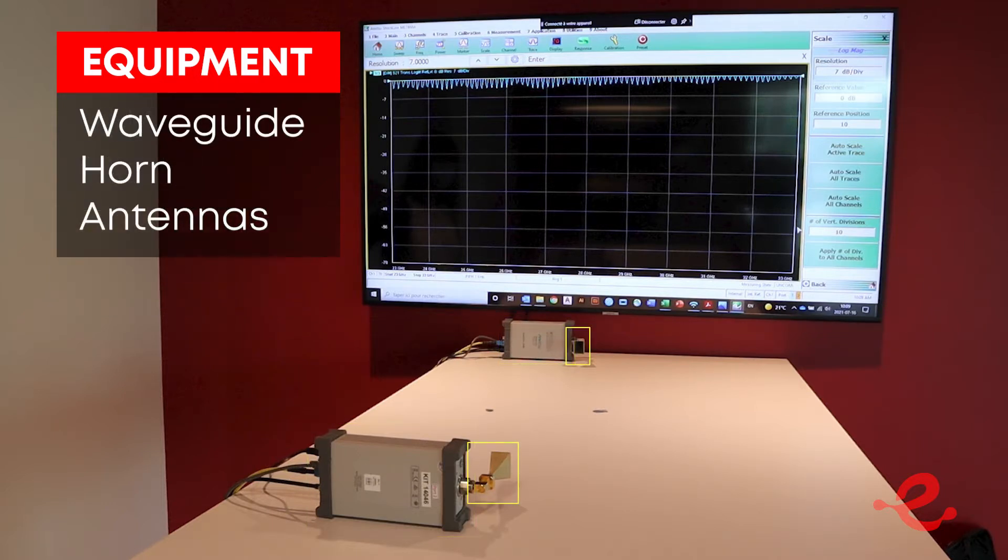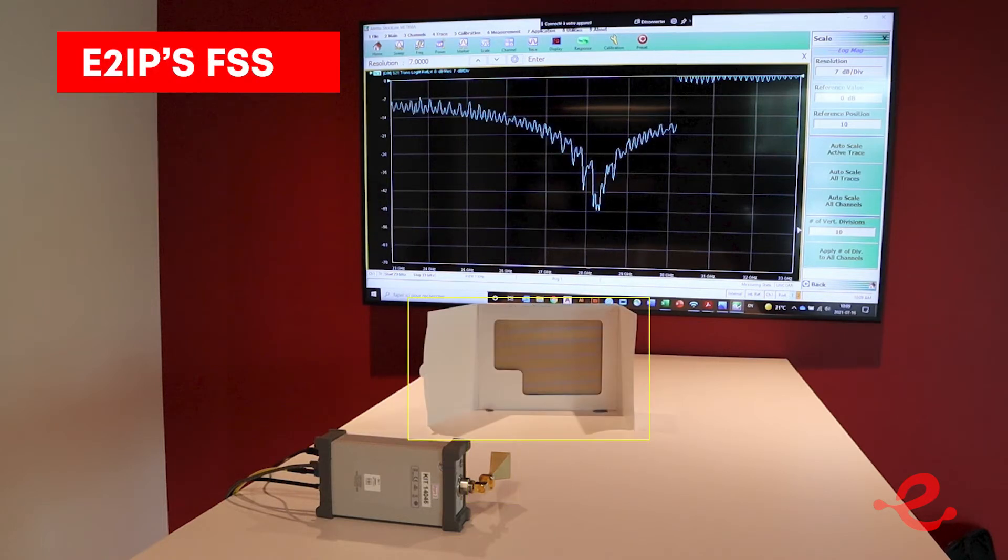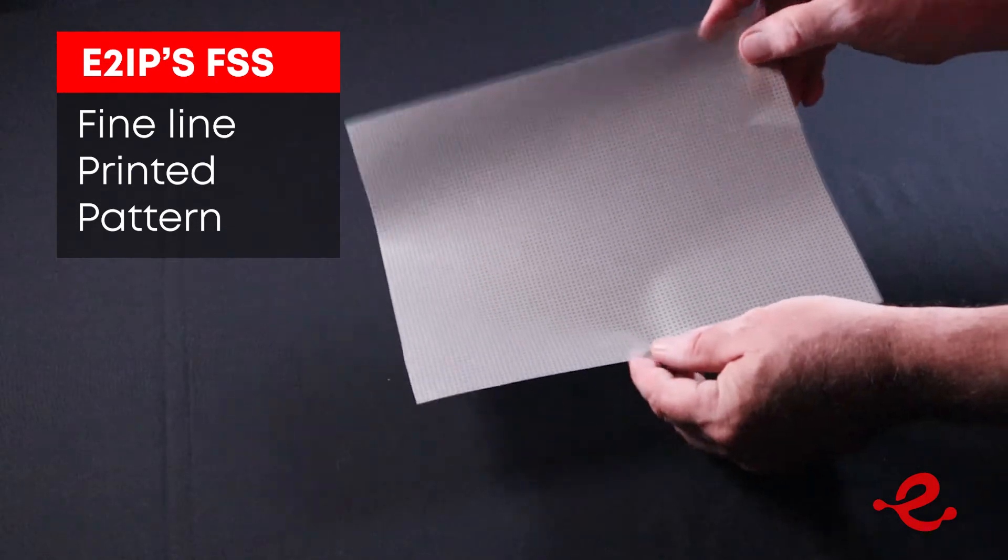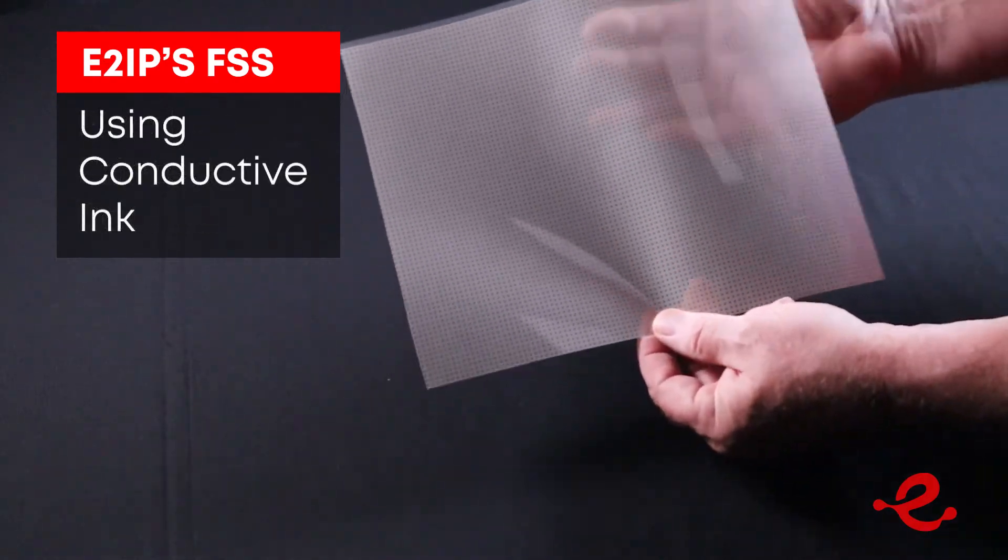The modules are each equipped with waveguide horn antennas and an E2IP frequency-selective surface. This is a thin, flexible, and transparent substrate with a fine line pattern printed on the surface using conductive ink.